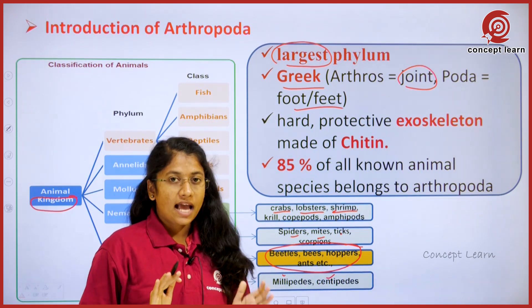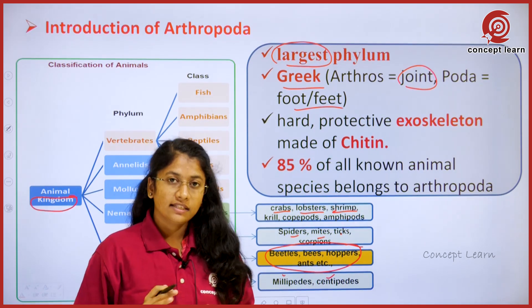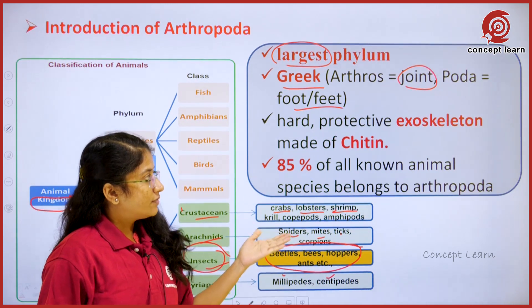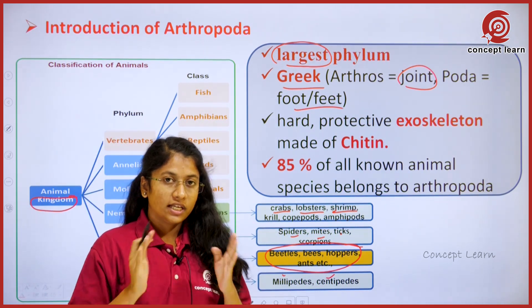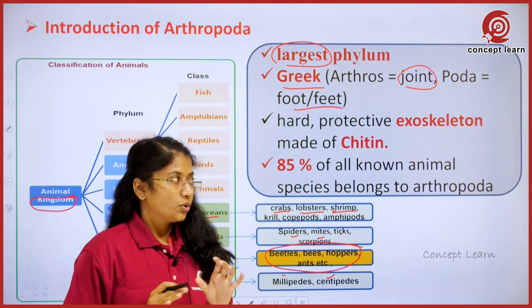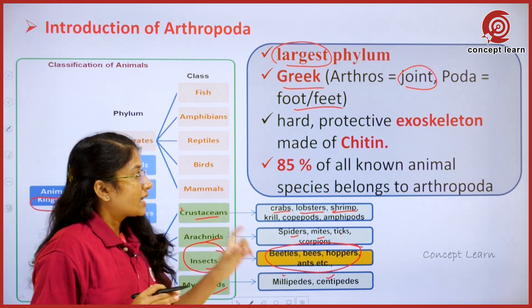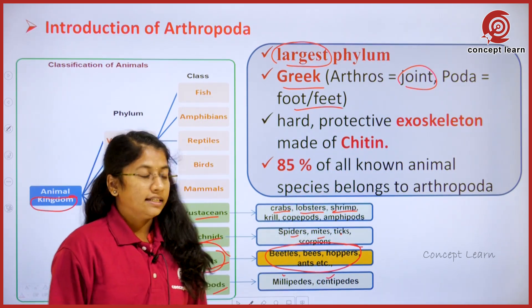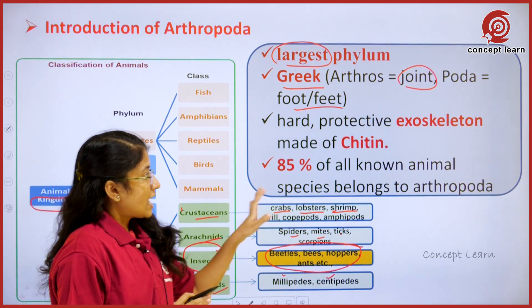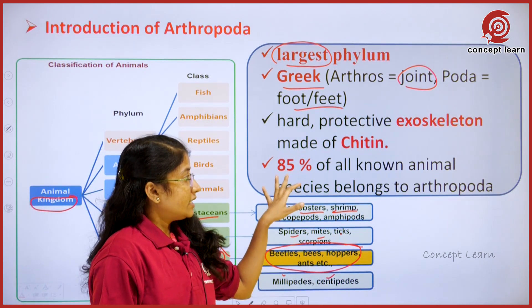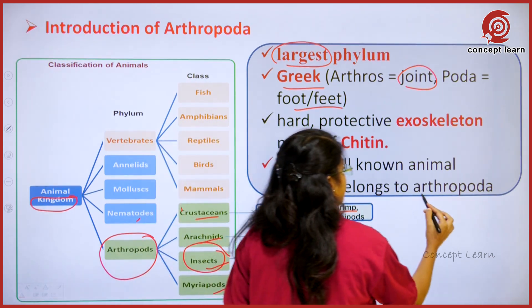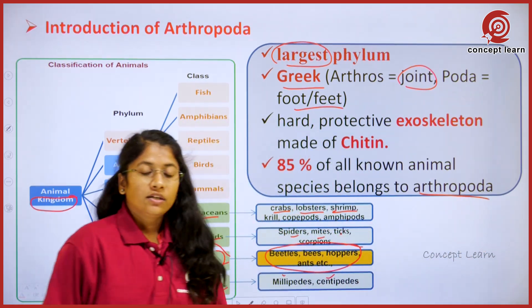These insects generally lack the bony endoskeleton which we see in the human body. Instead, they have an outer shell — an exoskeleton — which is mainly composed of the chemical compound chitin. These characters have made arthropods account for 85 percent of all known species.